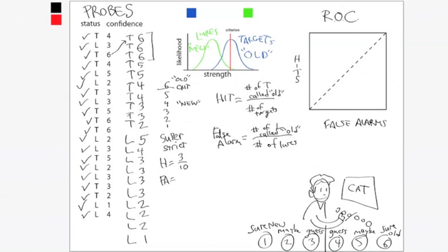It's not exactly fair, but that is a way to, by sweeping this criterion over this sort of confidence axis, we'll get a sense of how discriminable the targets and the lures are. So bear with me. False alarms is very easy to calculate here. There were 10 lures, and they didn't call any of them old by the super strict threshold, so 0 out of 10.